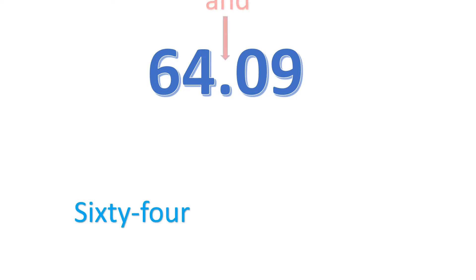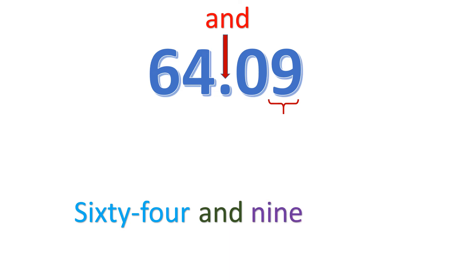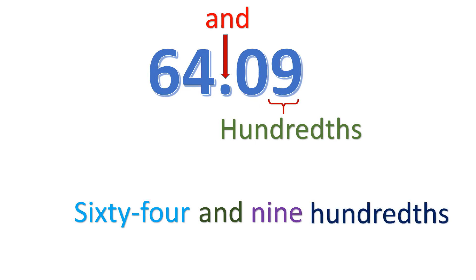Another example: we have 64.09. We start with the whole number, 64, and then the decimal point, which we read as 'and.' The number at the right side of the decimal point is 9, and 9 is in the hundredths place. So all in all, it's read as 64 and 9 hundredths.